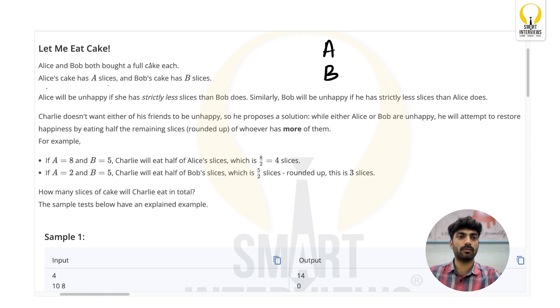Alice is going to be unhappy when she has strictly less number of slices than Bob, that means A is less than B. And Bob is going to be unhappy when Alice has more slices than him. There is one more friend who is Charlie, and Charlie doesn't want either of his friends to be unhappy, so he proposes a solution that while either Alice or Bob are unhappy, he will attempt to restore happiness by eating half the remaining slices rounded up.